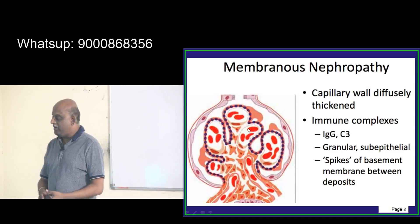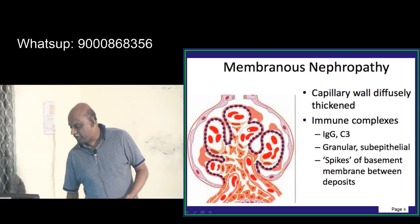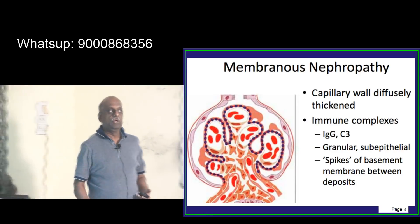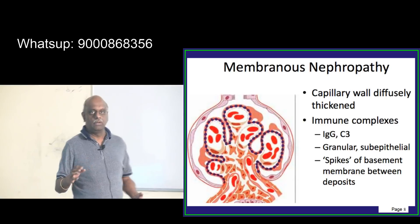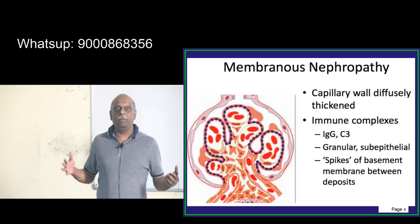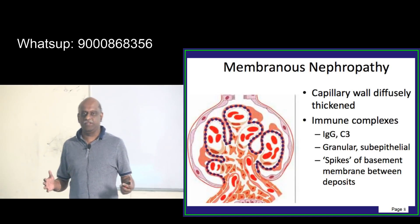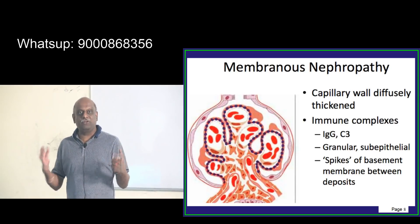On the basement membrane there are spikes between the deposits, which is a classical feature that characterizes membranous nephropathy.